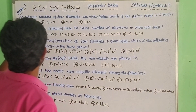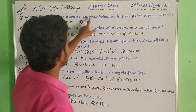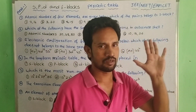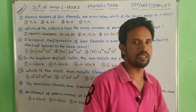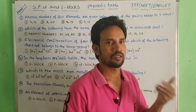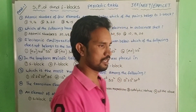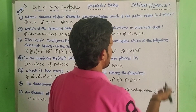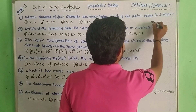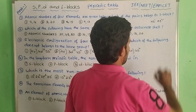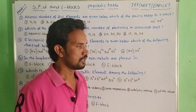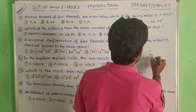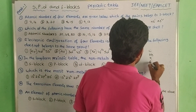Now let's check our first question. Atomic numbers of a few elements are given below — which of the following pairs belongs to S-block? We have 4 pairs. S-block can be found in groups 1 and 2 — that is ns1 and ns2. In group 1A, the elements are Lithium, Sodium, Potassium, Rubidium, Cesium, Francium.